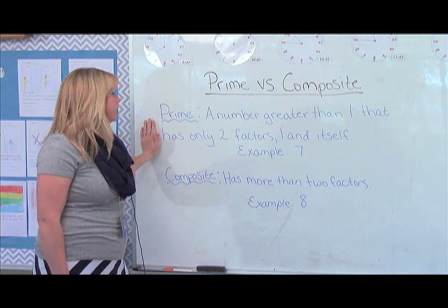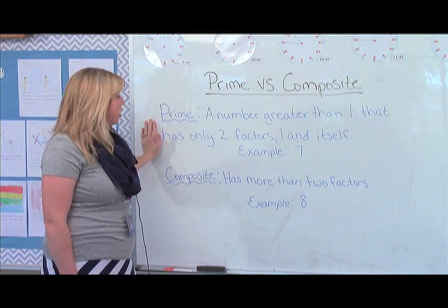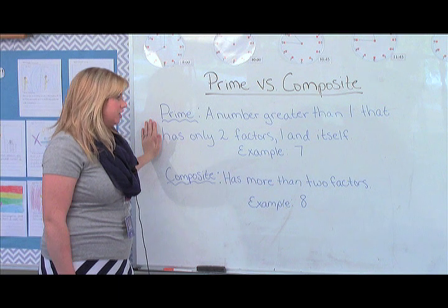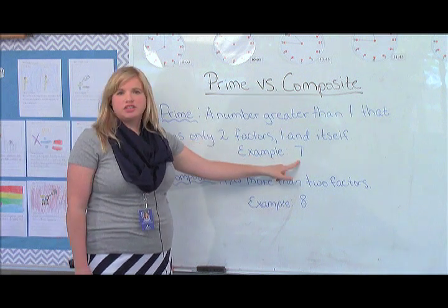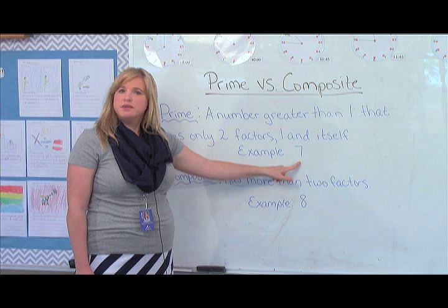If we look at prime numbers, we know prime numbers are a number greater than one that has only two factors: one and itself. An example would be the number seven. It only has two factors, seven times one or one times seven.